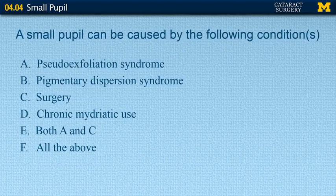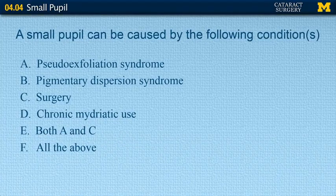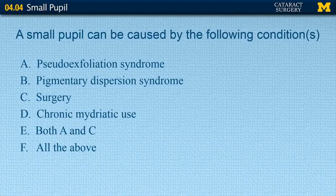Question two: a small pupil can be caused by the following conditions. A, pseudoexfoliation syndrome; B, pigmentary dispersion syndrome; C, surgery; D, chronic miotic use; E, both A and C; and F, all the above.